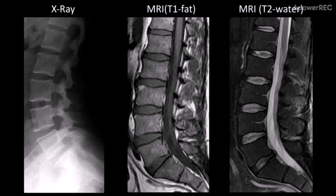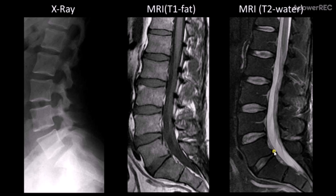Let's start with a disc herniation — a slip disc. For soft tissue, we use an MRI. Here we have water in the cartilage discs, and the black bits are bone. When we get to a disc that looks a little black, that's the degenerated, dehydrated disc that forms cracks. The liquid eventually leaks out and you've got this bulge here — this herniation.